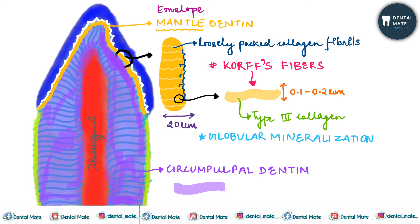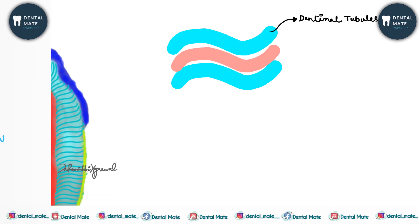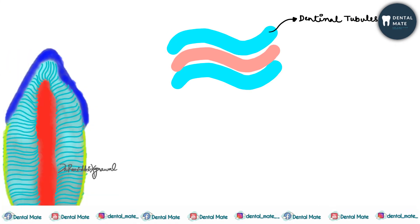At an ultrastructural level, circumpulpal dentine has smaller diameter collagen fibrils — about 0.05 micrometers in diameter. The collagen fibrils in the circumpulpal dentine are more closely packed.